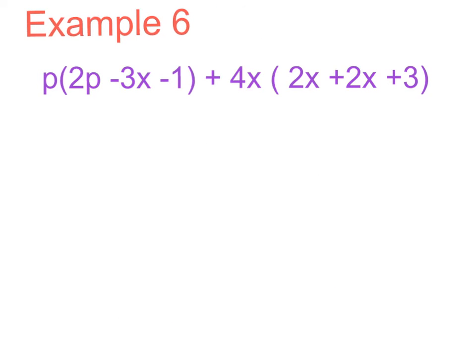So they're getting a little bit longer now. Example 6 is p bracket 2p minus 3x minus 1 plus 4x multiplied by 2x squared plus 2x plus 3. What we're going to do is we're just going to work this out in parts. The first bit I'm going to work out is p bracket 2p minus 3x minus 1. So along the side I'm going to have p, and along the top I'm going to have 2p minus 3x minus 1.